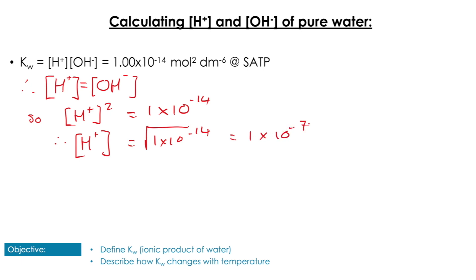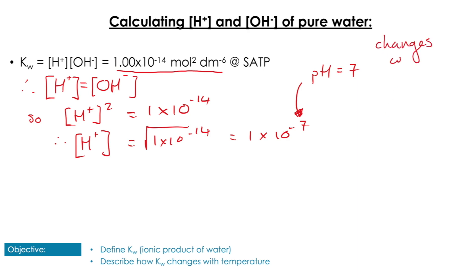That gives us [H⁺] = 1 × 10⁻⁷. If you remember calculating pH, 1 × 10⁻⁷ corresponds to pH 7, which makes sense — water has a pH of 7, and this corroborates that by the concentration of H⁺ in water being 1 × 10⁻⁷.